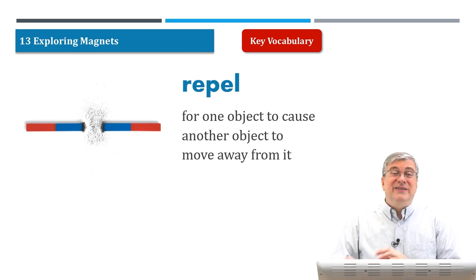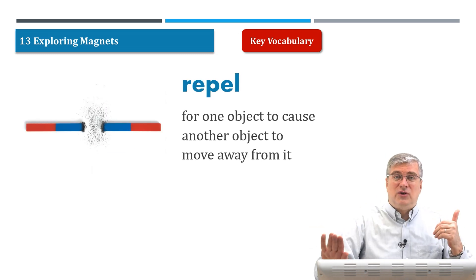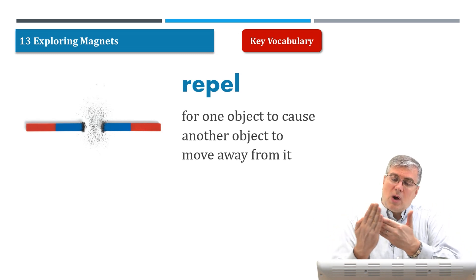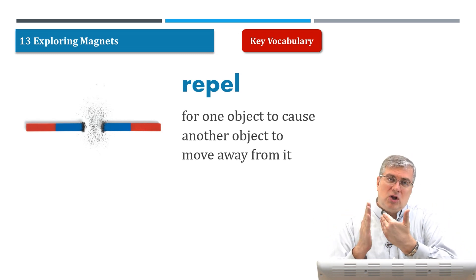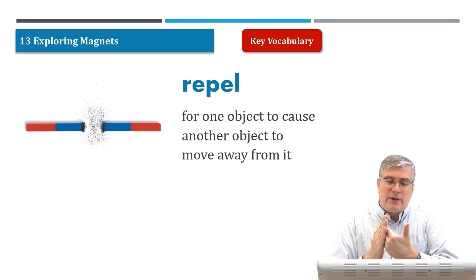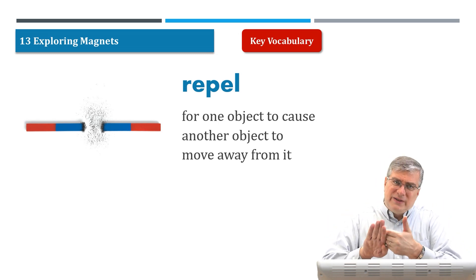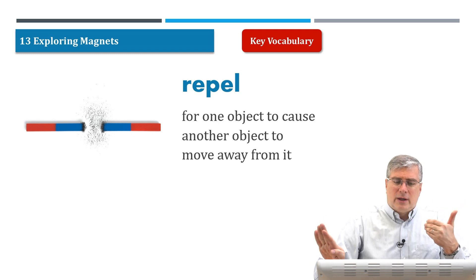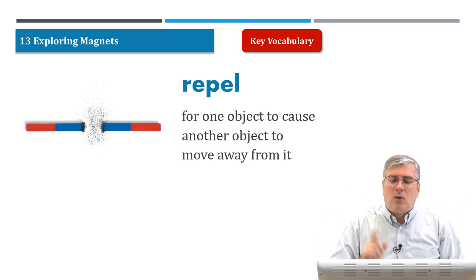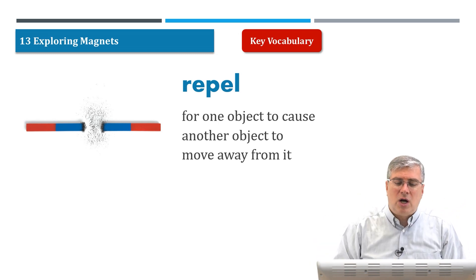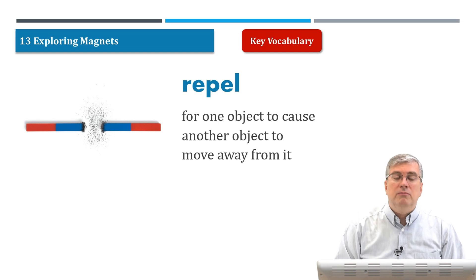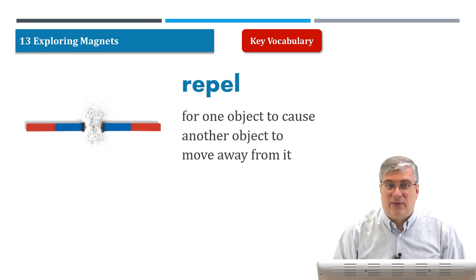Next, we have repel. Repel is the opposite of attract. So if attract means the two objects are moving closer to each other, repel means that they move away from each other. Repel is for one object to cause another object to move away from it.